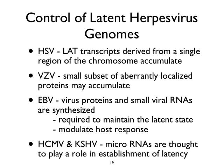Epstein-Barr virus synthesizes a family of proteins during latency, one of which — EBNA, the Epstein-Barr virus nuclear antigen — is important for replicating the viral genome in a dividing cell, along with a small membrane protein called LMP2. It also encodes small viral RNAs, possibly similar to the VA RNAs of adenovirus that regulate PKR. These are required to maintain the latent state and modulate the host response by dampening antigen presentation.